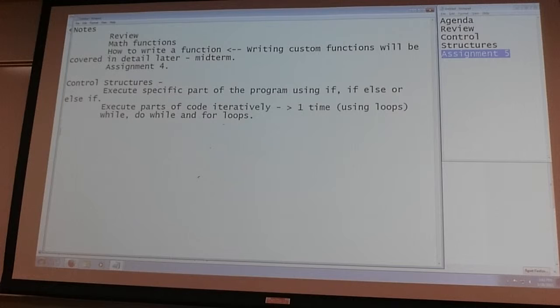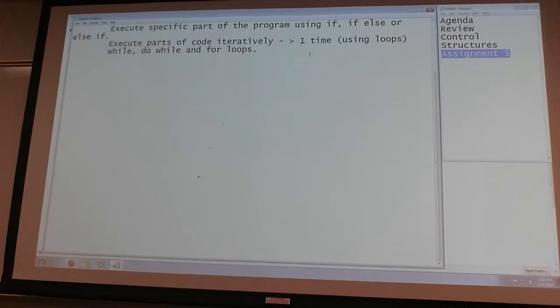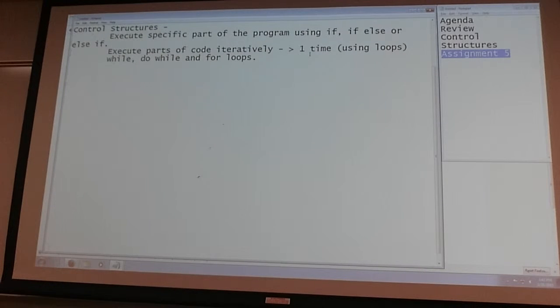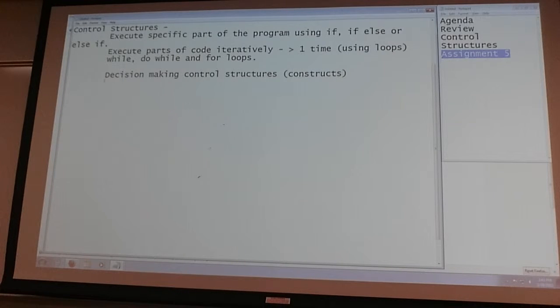So I'm interested in first looking at decision making constructs. Decision making control structures. And we also use the term constructs for this. So you can have these four constructs that you will end up learning in this course. If, else, else if and switch.